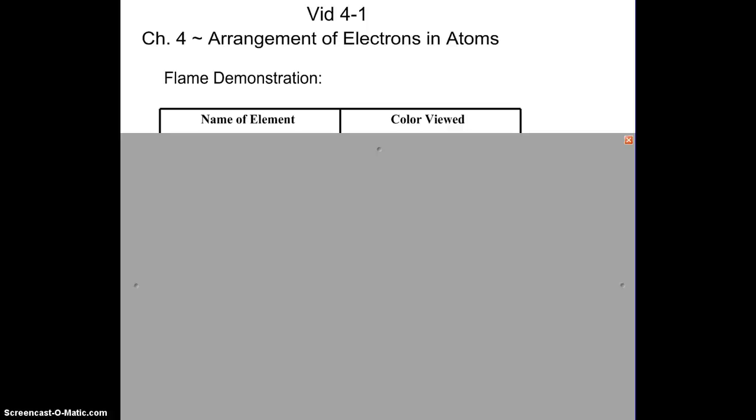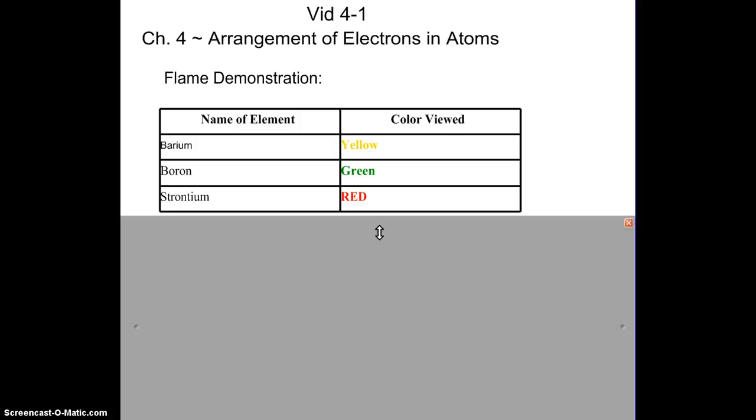So let's look at some of those results that we saw in that video. I believe the first three that were shown were barium, boron and strontium. Each one of these elements burned a different color. Barium was yellow, boron was green and strontium was red. Now the question is why is that? Why do we have different colors based on just burning of these elements?